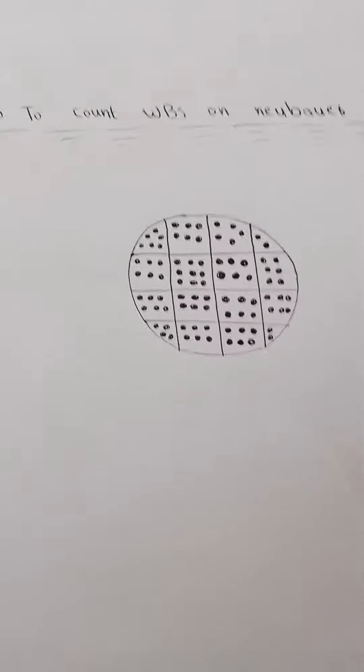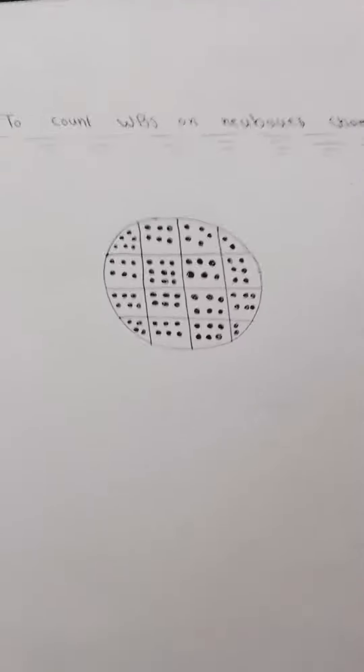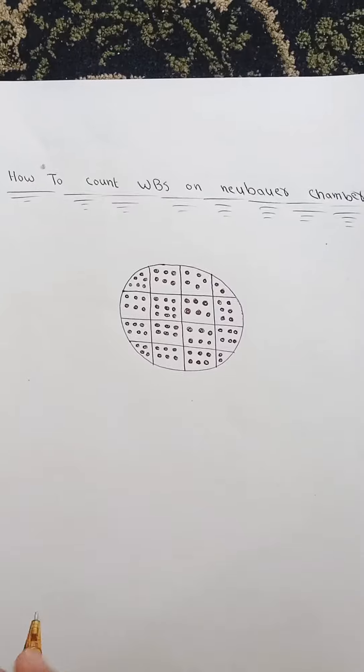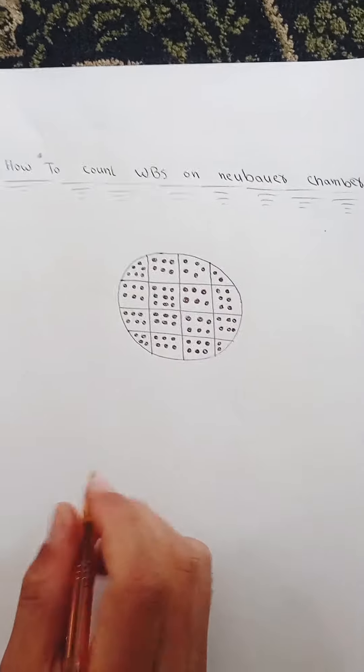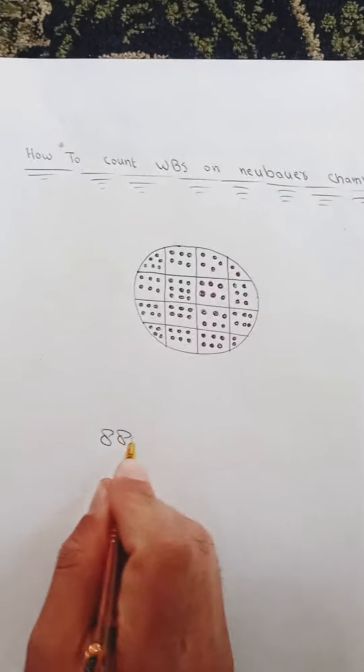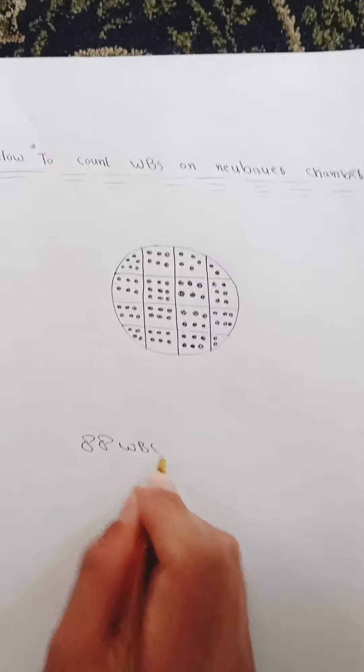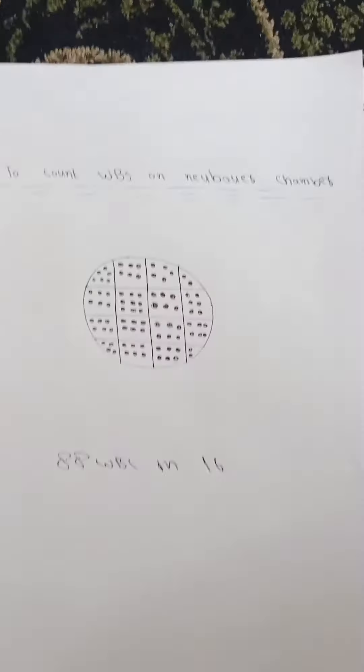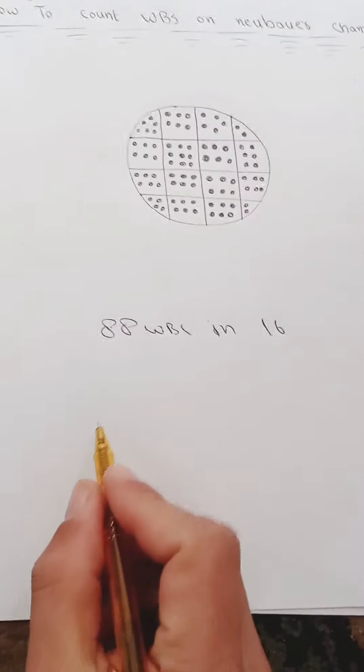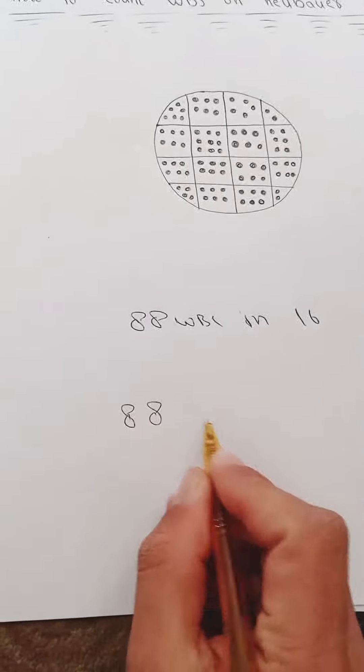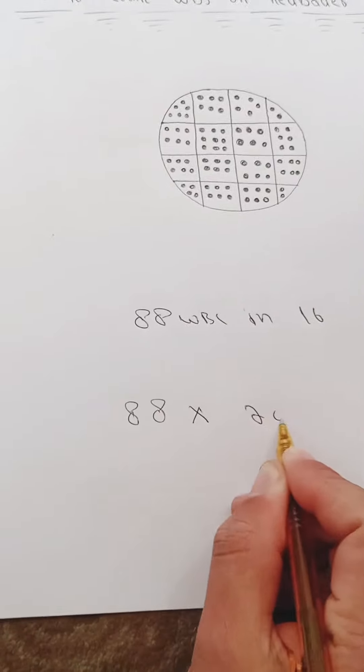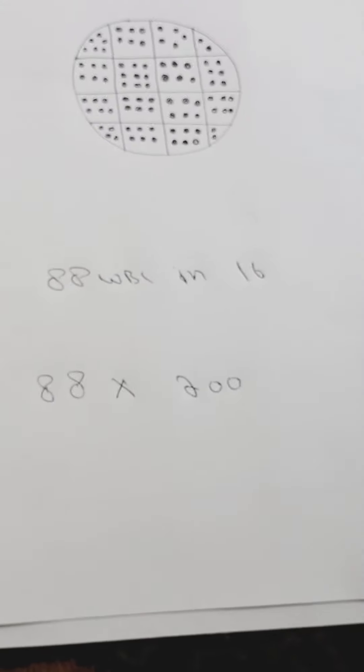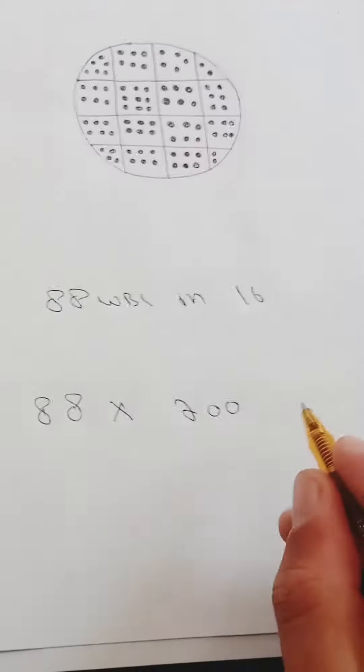For that, first of all you need to count WBC on 16 boxes. Let's suppose you count 88 WBC in 16 boxes. So multiply 88 by 200.